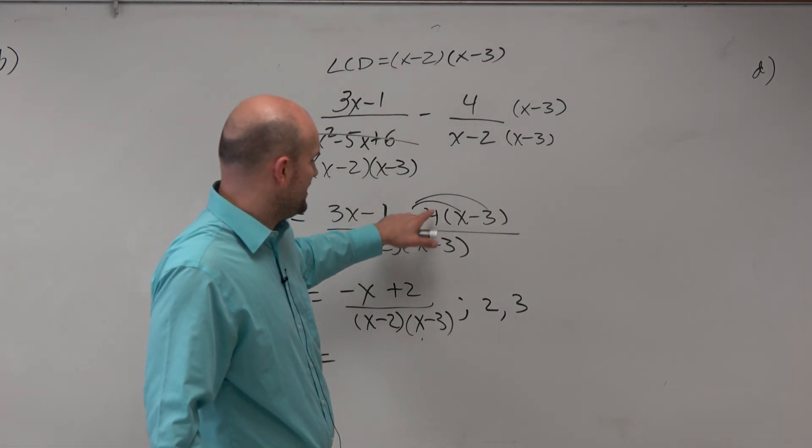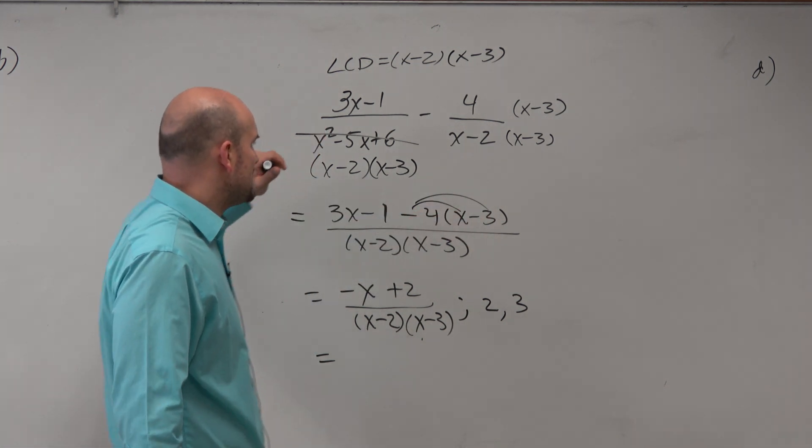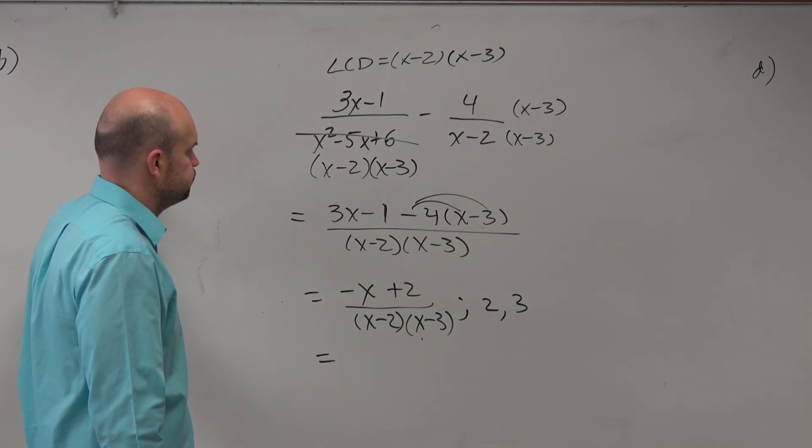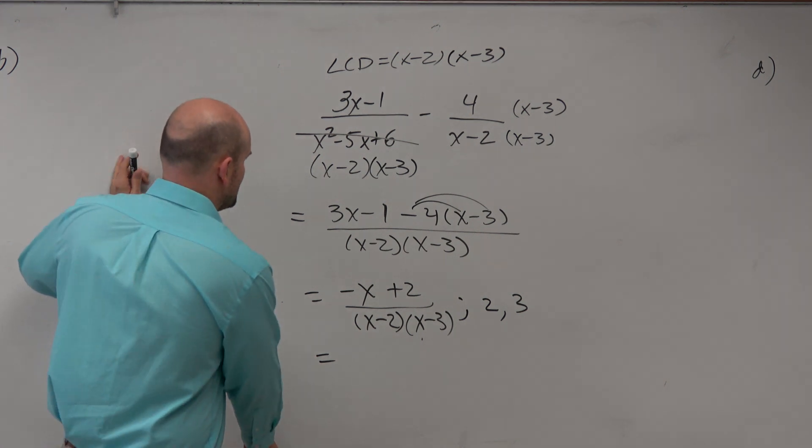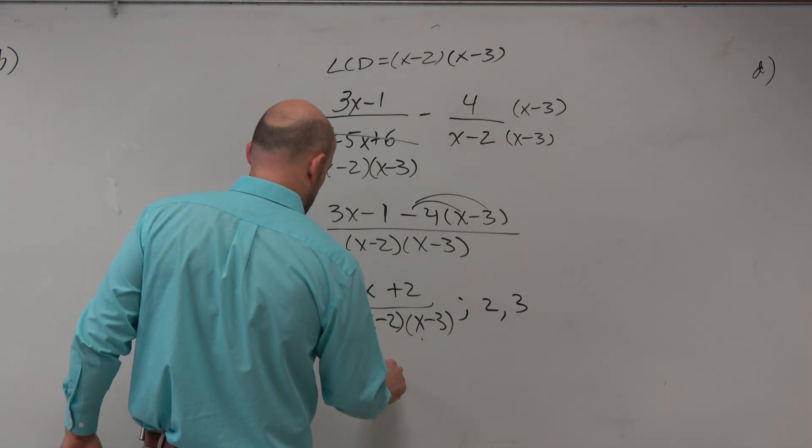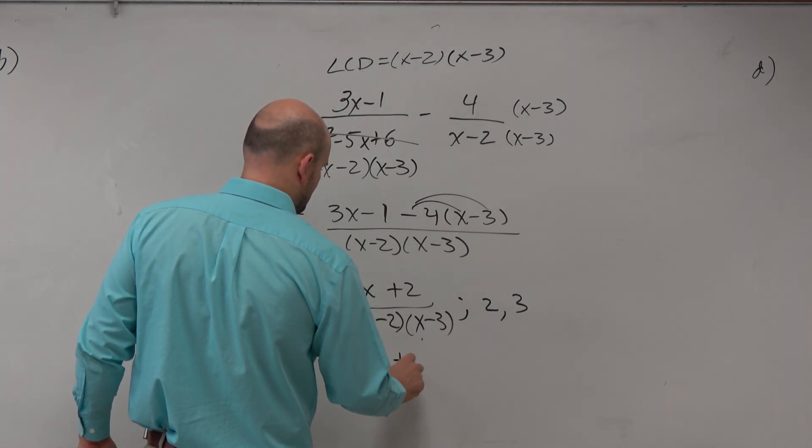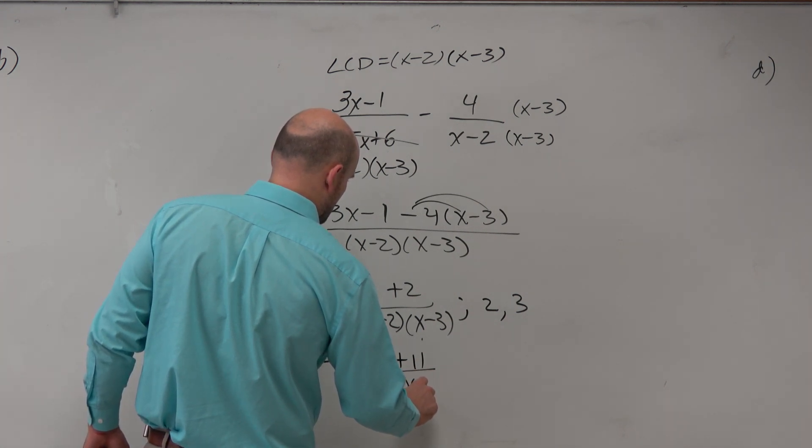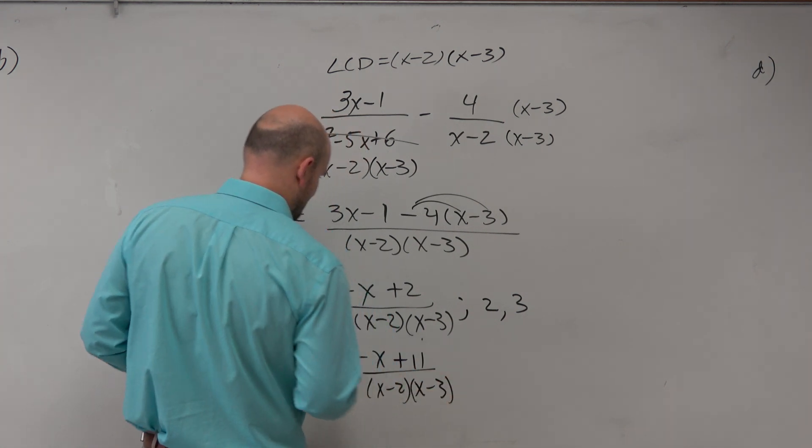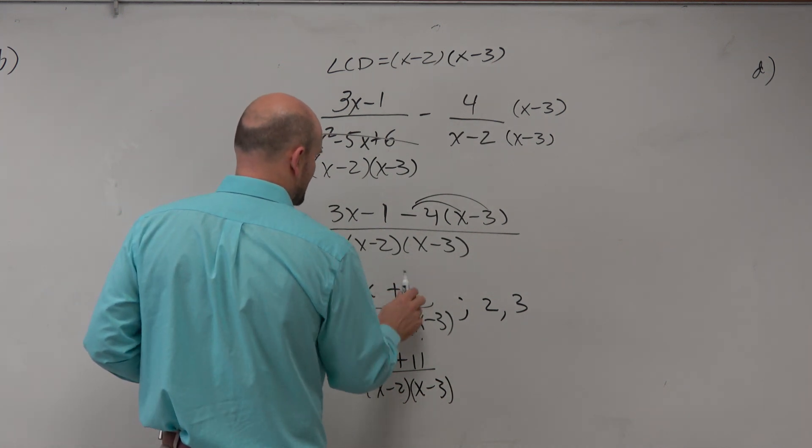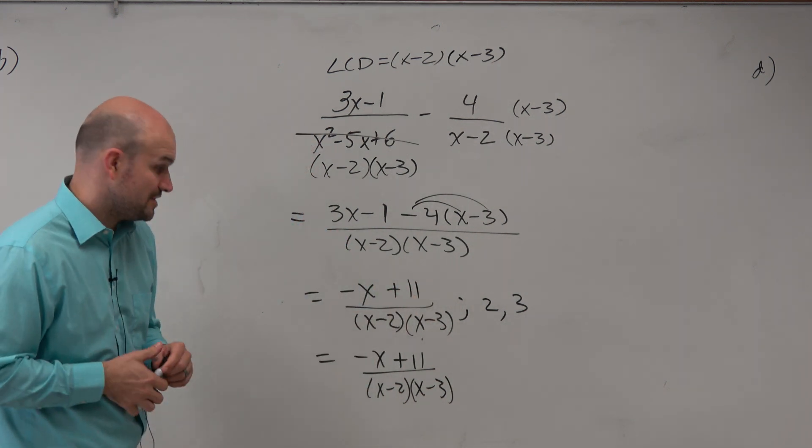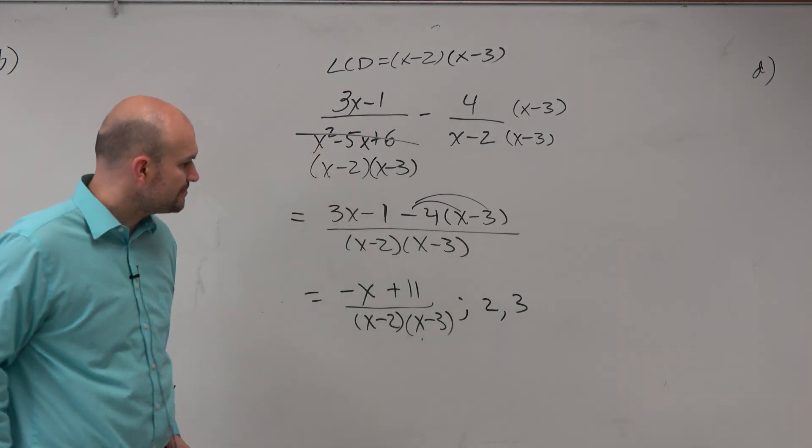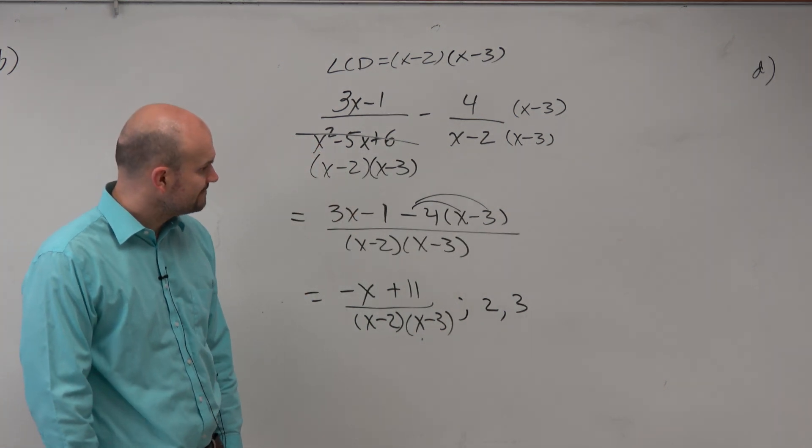So yeah, I totally overshot the 4. So that becomes plus 11. So that's negative x plus 11. Dang it. That would've been cool, though, wouldn't it? Well, I guess I can just put 11 there. But the excluded values don't change, though, right? There you go.